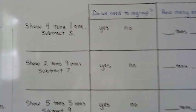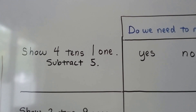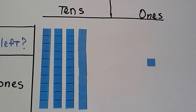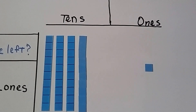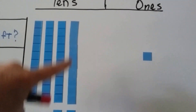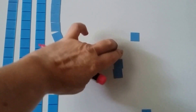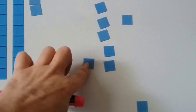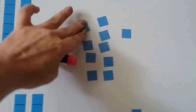Let's do this first one. It says show 4 tens, 1 one, subtract 5. So over here I've got 4 tens and 1 one. We need to take 5 away. Well, there's only a 1 here. So what we can do is break this apart as ones and regroup it to the ones place. We'll take 1 of the tens and give it to the ones.